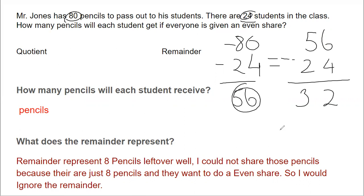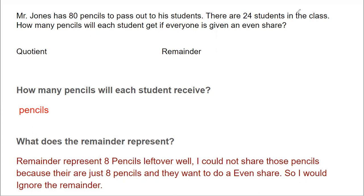Since we have 32 pencils and 24 students, we can distribute one more. So 32 minus 24 gives us 8. Now we can't distribute those 8 pencils anymore because 8 is less than 24. So our quotient is 3 and our remainder is 8 pencils.